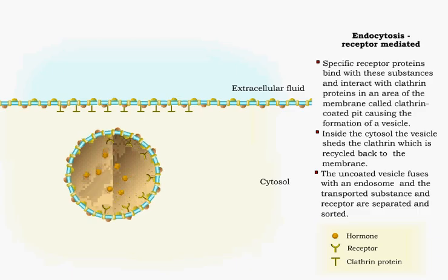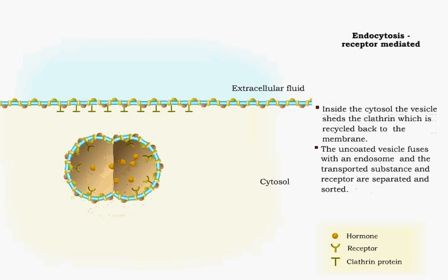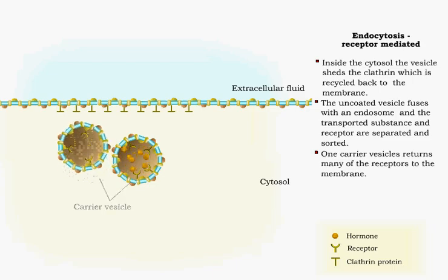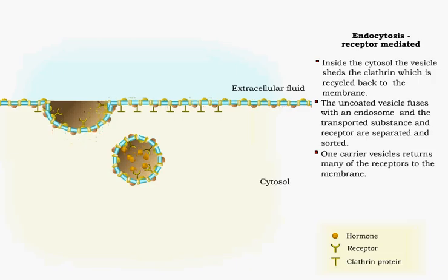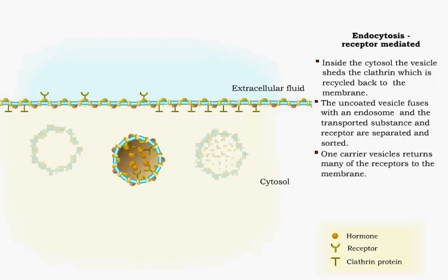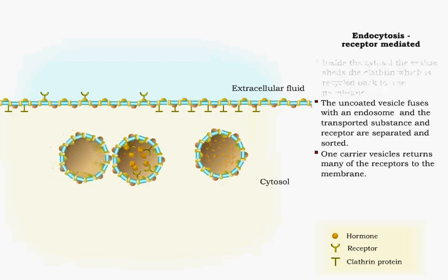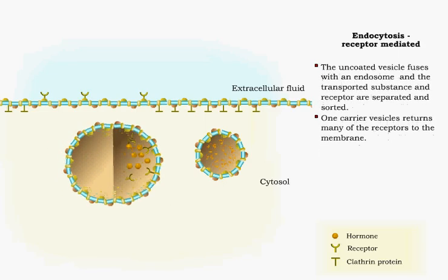Many of the receptors leave the endosome via a carrier vesicle and are returned to the plasma membrane. The ingested substance and some receptors are transported in carrier vesicles to a late endosome, which binds with a lysosome, where the substances are digested into usable products by the cell.